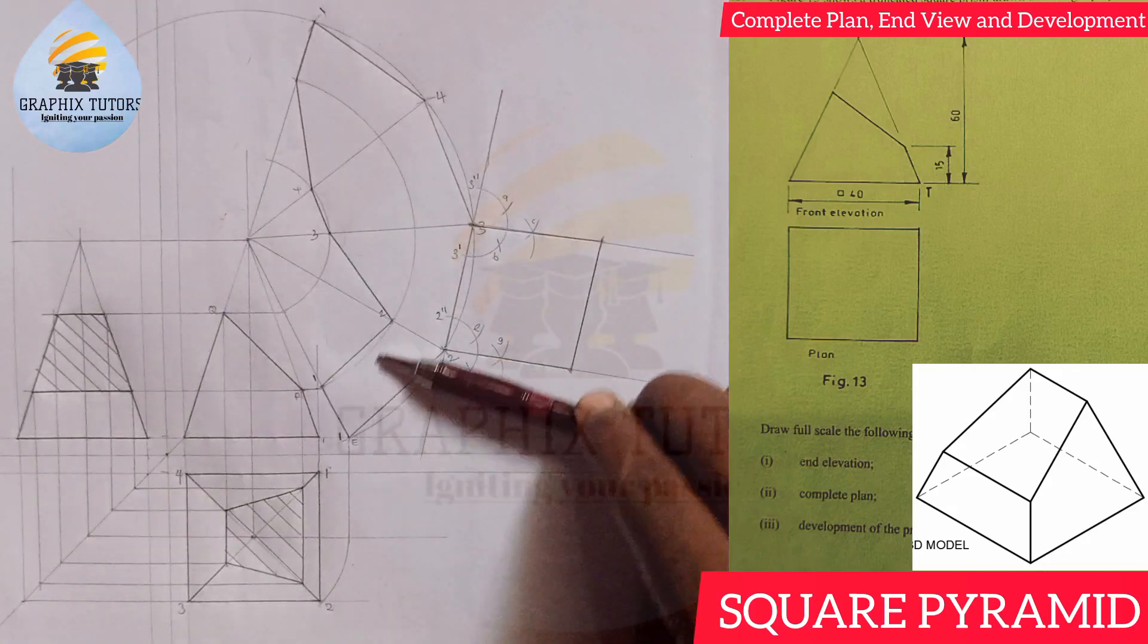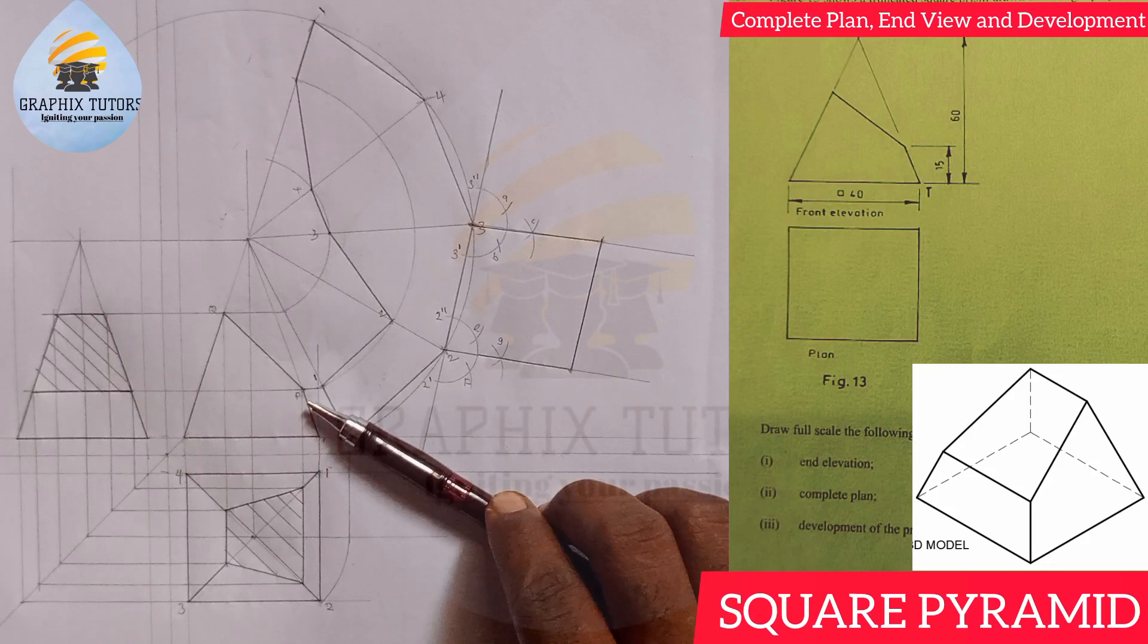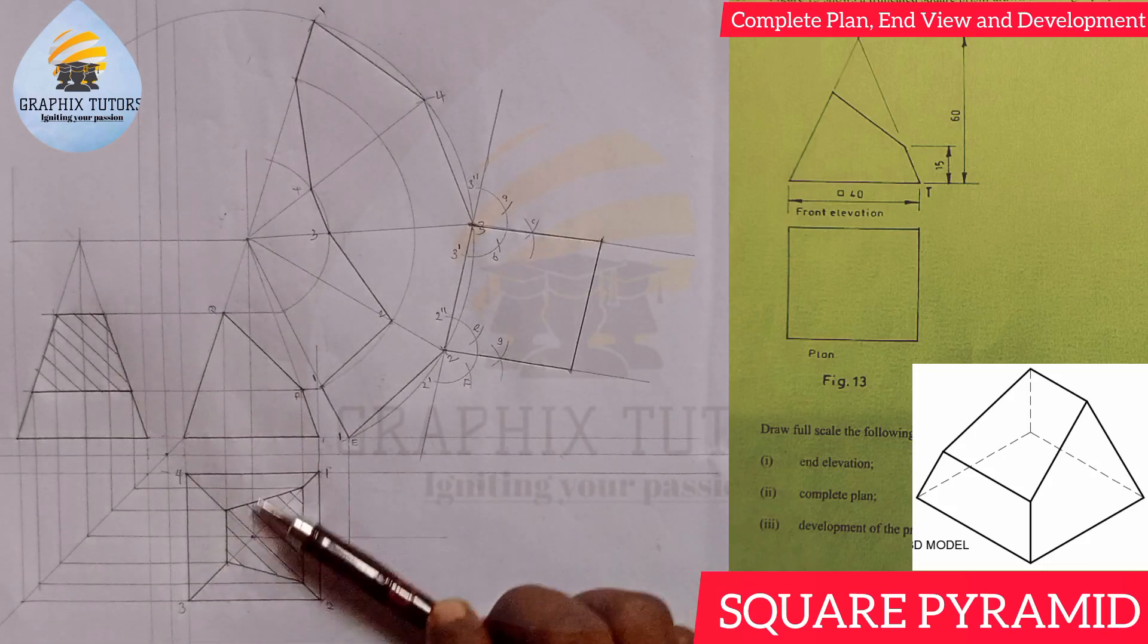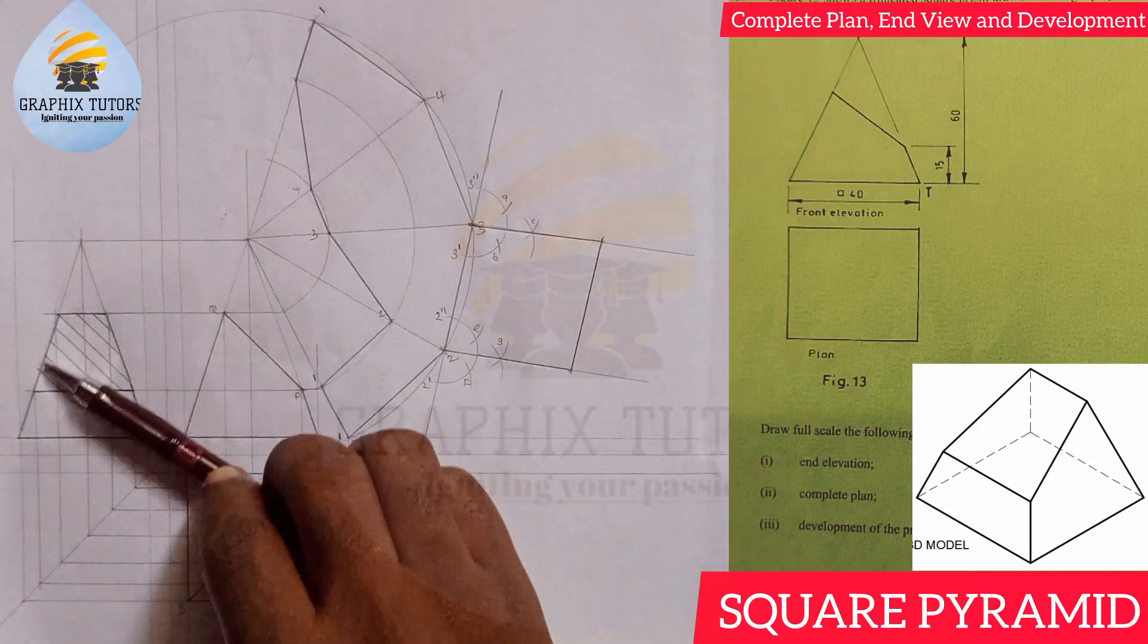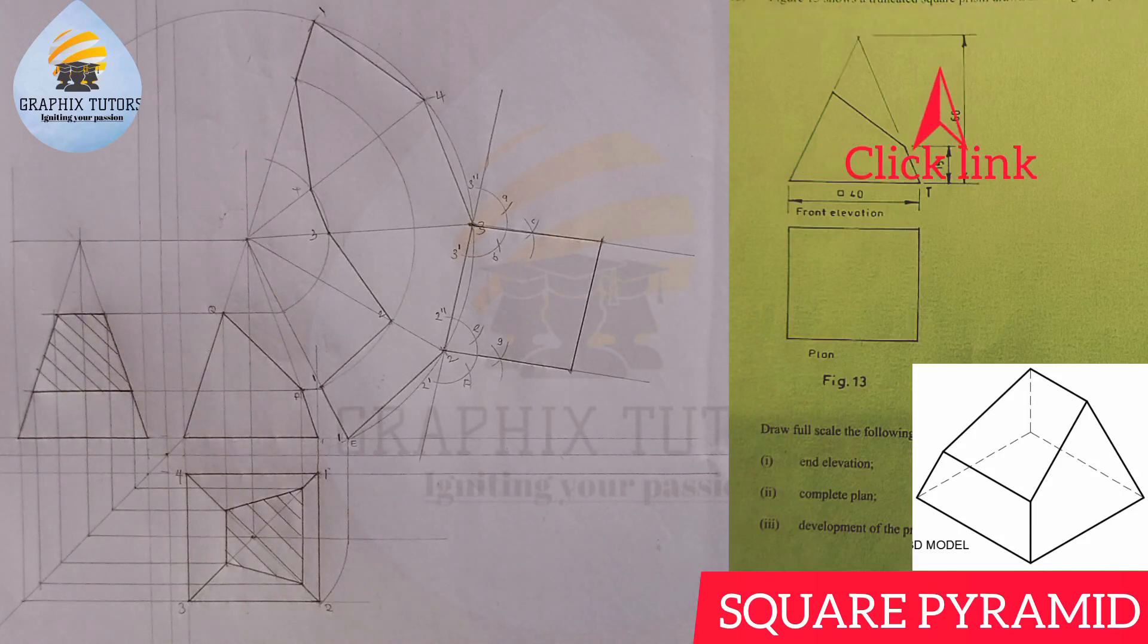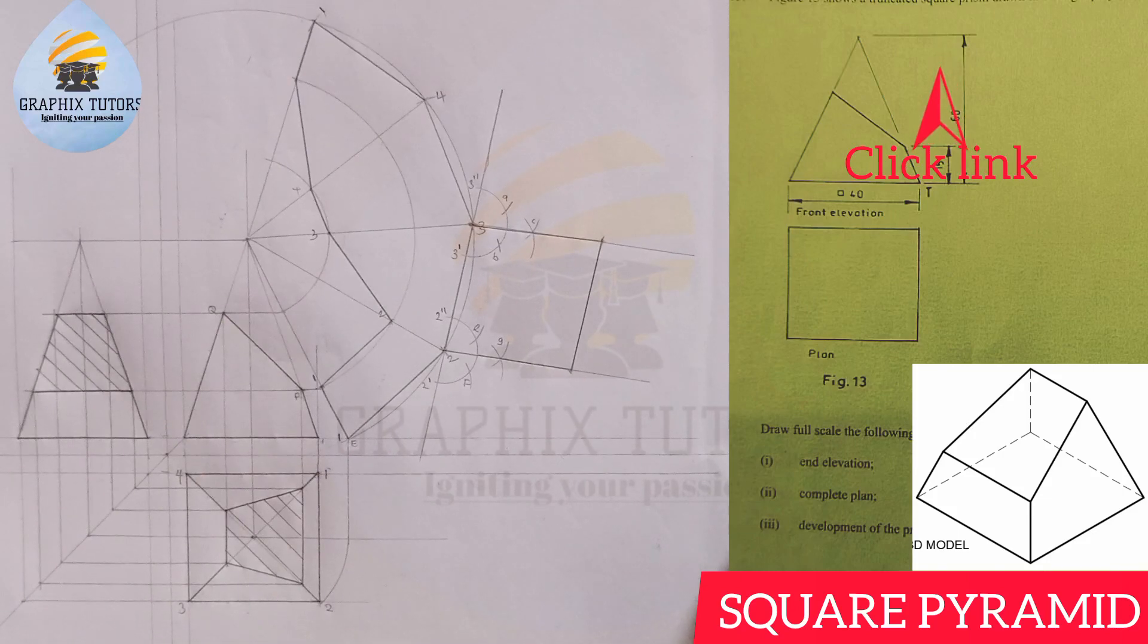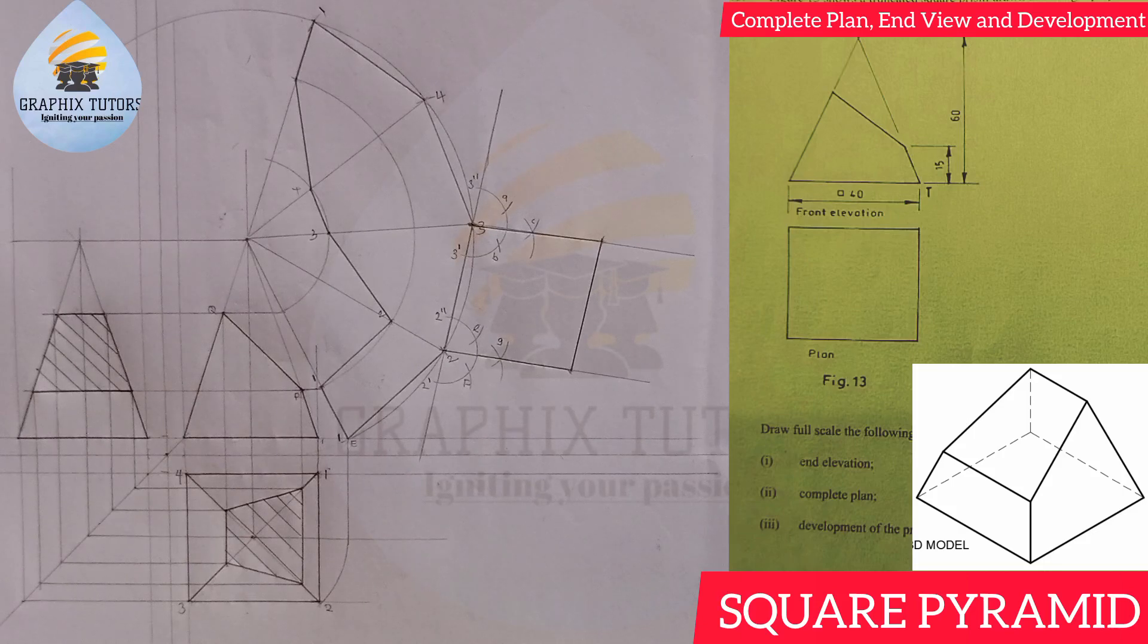This is the complete plan of this truncated square pyramid, and this is the end elevation of the truncated square pyramid. You can click the link that is displayed at the right-hand side of the screen at the top here in order to access the video, or you can wait and click on the end screen of this particular video.